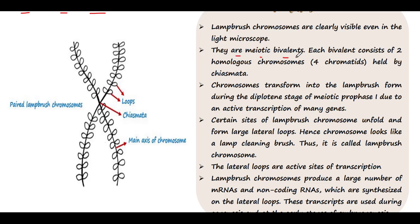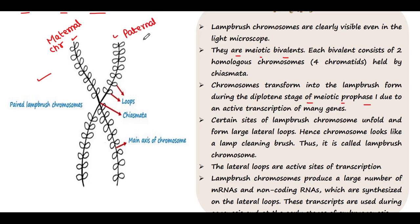So what does that mean? Lampbrush Chromosomes are formed during the diplotene stage of meiotic prophase 1. This is the Lampbrush Chromosome — this is the meiotic bivalent. That means this is the maternal chromosome and this is the paternal chromosome, or vice versa.